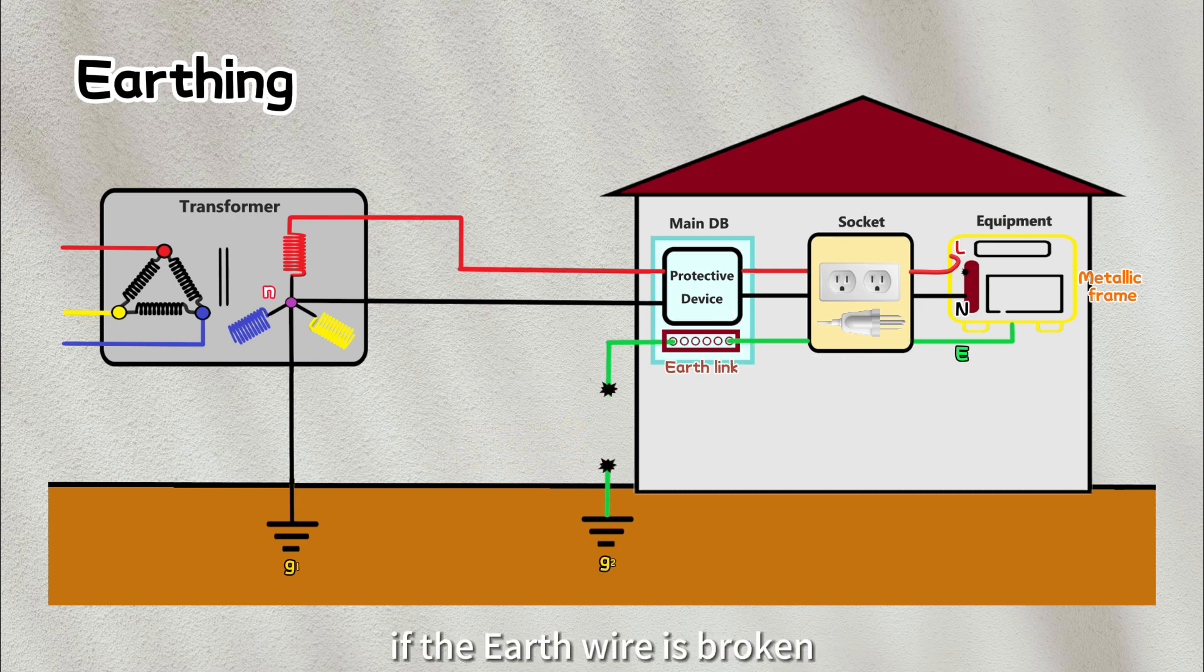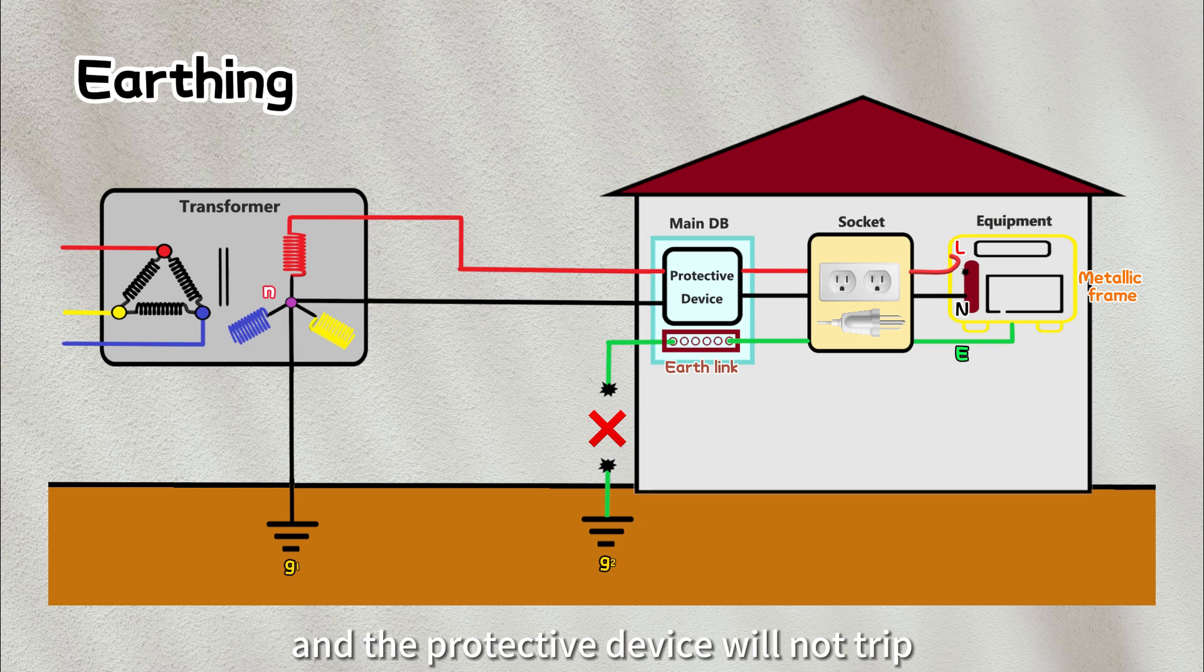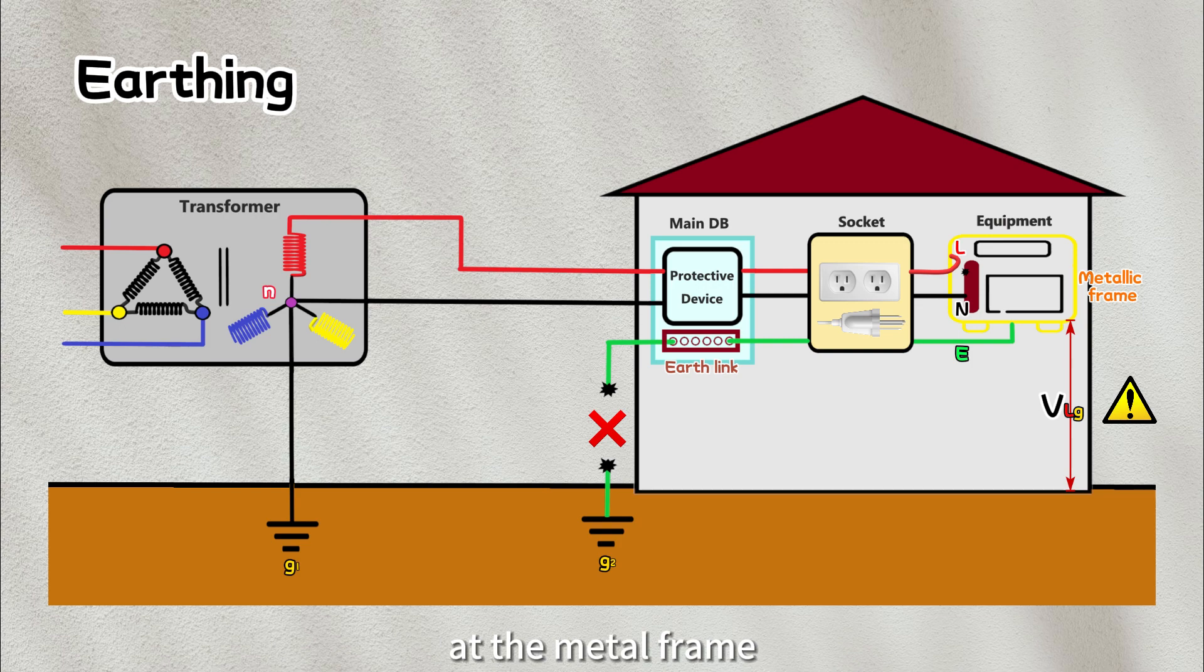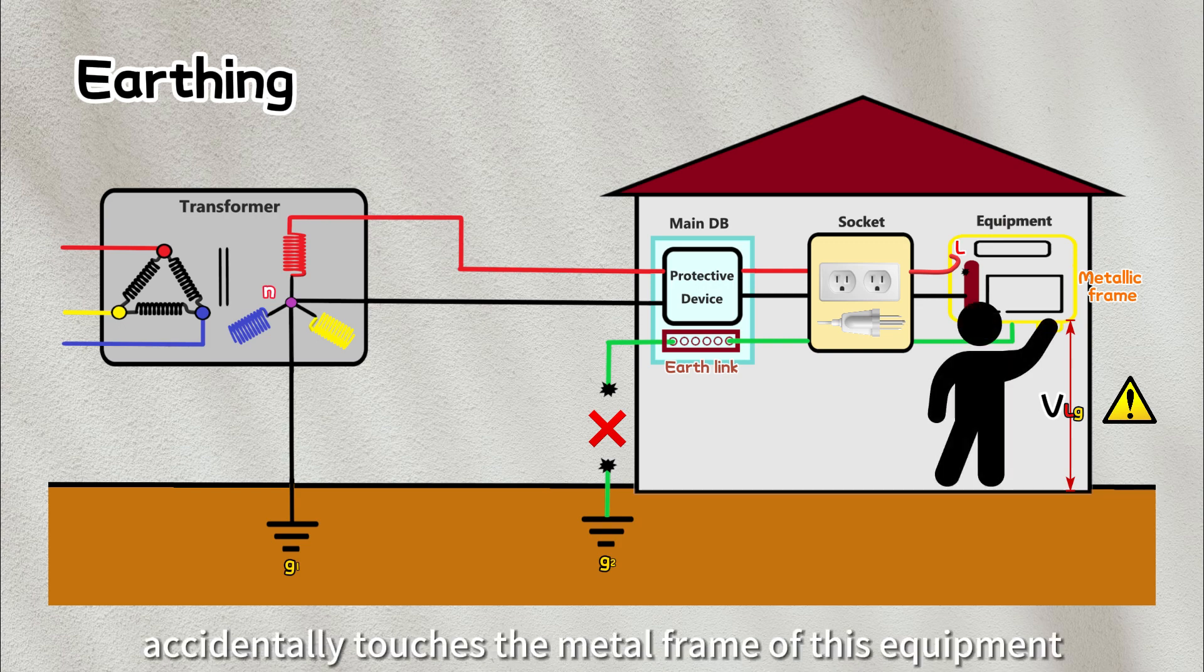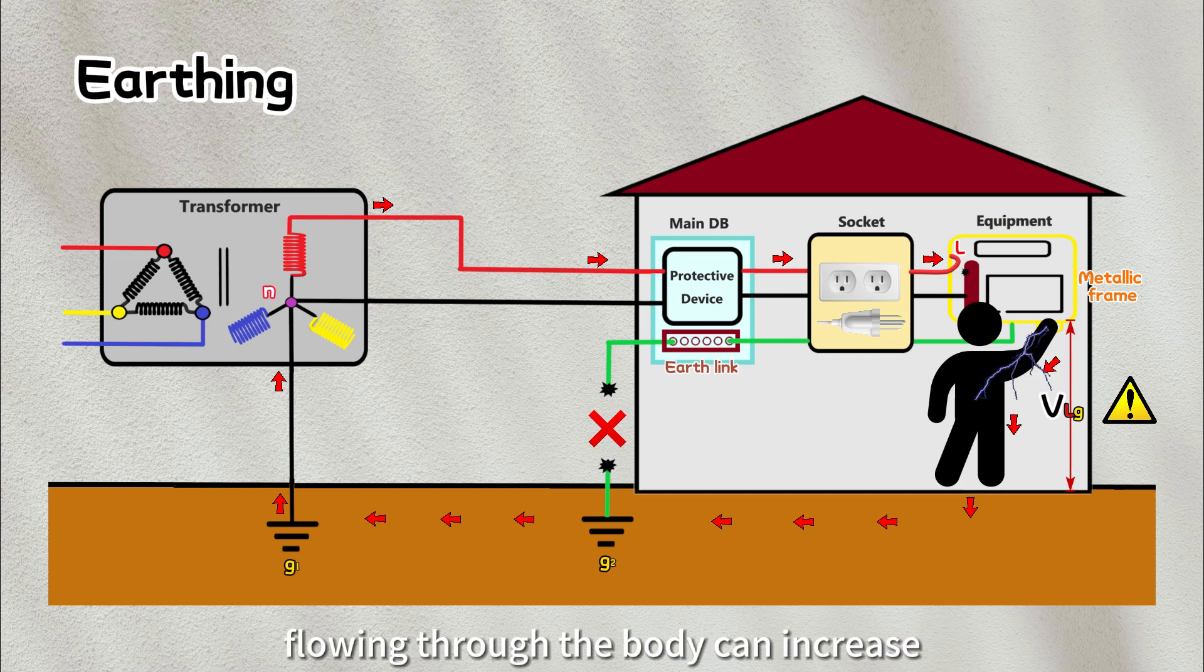Let's observe what will happen if the earth wire is broken. Now if the live wire touches the metal frame, the loop is not complete. There will be no current flowing and the protective device will not trip. In this case, there will be a dangerous voltage at the metal frame remain unnoticed. When a person accidentally touches the metal frame of this equipment, the person will be completing the loop through ground back to the transformer source. Consequently, the fault current flowing through the body can increase risk of electrocution. Therefore, it is important to ensure a proper connection of earth wire to ground.